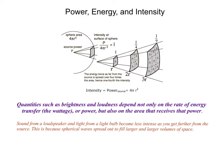So sound from a loudspeaker and light from a light bulb become less intense as you get further from the source, which is because spherical waves spread out and fill larger volumes of space. So to conserve energy, the wave's amplitude has to decrease with increasing distance. Now, we can treat this power, energy, and intensity idea quantitatively, but we're just responsible only for a qualitative understanding of this stuff. So we're moving on.